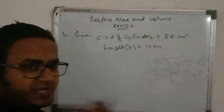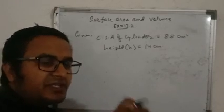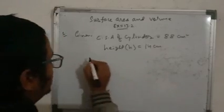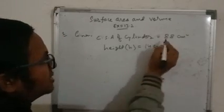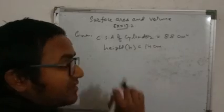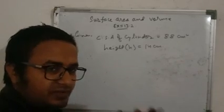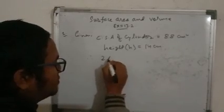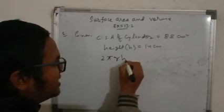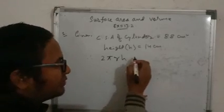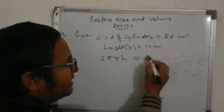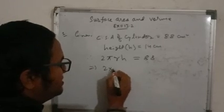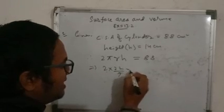It means you have to find the radius first. After getting the radius, you double it to get the diameter. The curved surface area formula of a cylinder is 2πrh. So CSA = 2πrh = 88. Now put the values: 2 × (22/7) × r × 14 = 88.